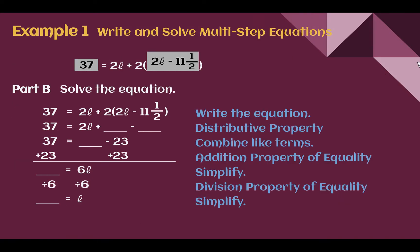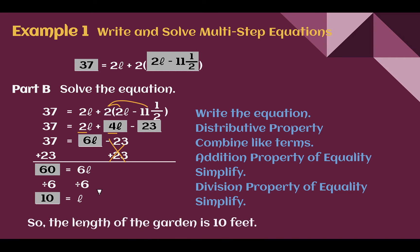Now let's solve for L. We have 37 equals 2L plus 2 times the quantity (2L minus 11 and a half). Distributing: 2 times 2L is 4L, and 2 times 11 and a half is 23, giving us 4L minus 23. Combining like terms: 2L plus 4L is 6L, so 37 equals 6L minus 23. Adding 23 to both sides: 37 plus 23 is 60. Dividing both sides by 6, L equals 10. So the length of the garden is 10 feet.